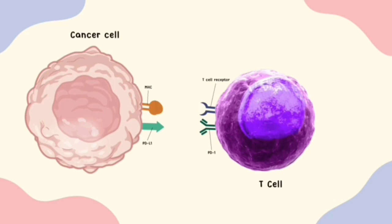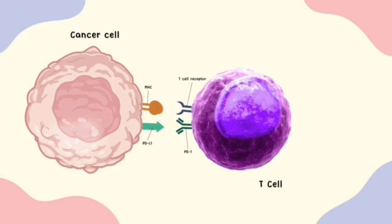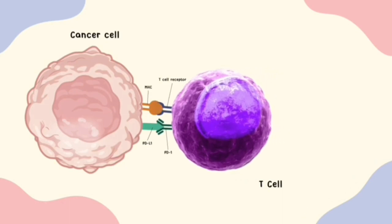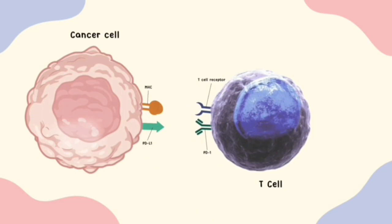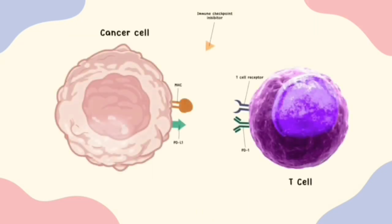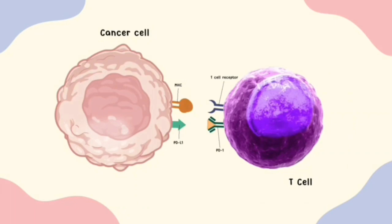However, in the TME, cancer cells take advantage of this by producing PD-L1 when T-cells release interferon gamma. PD-L1, the ligand of PD-1, interferes with the antibody cancer immune response by binding to its receptor. When PD-1 and PD-L1 are bound, the cytotoxic activity of T-cells is deactivated. Immune checkpoint inhibitors form a barrier between PD-1 and PD-L1, inhibiting the deactivation of T-cells, which allows T-cells to find and attack the cancer cells.